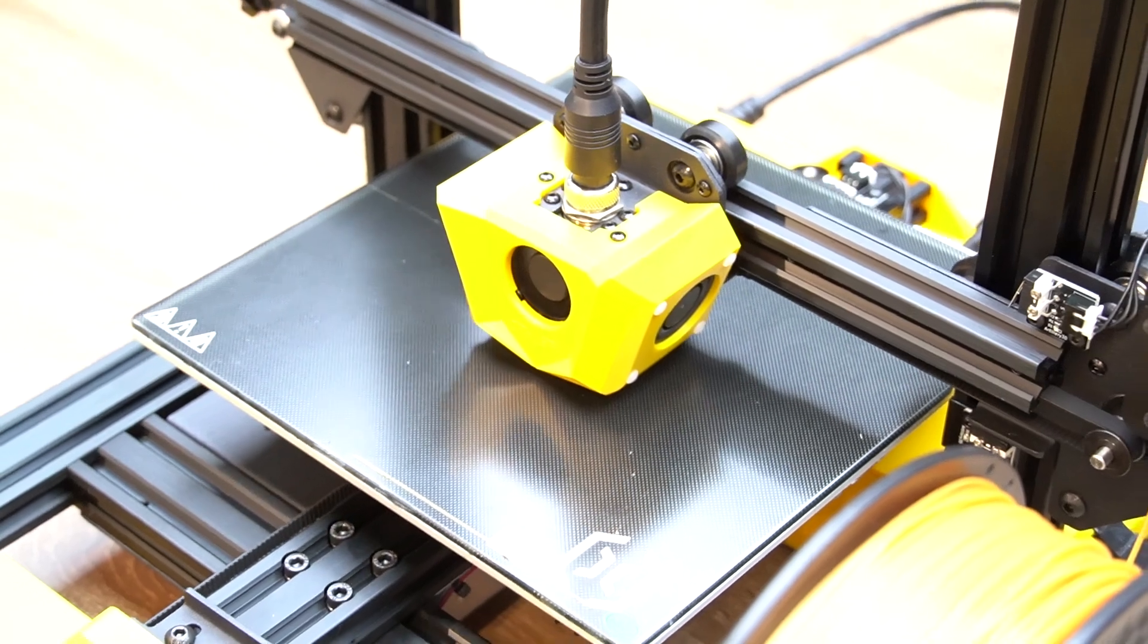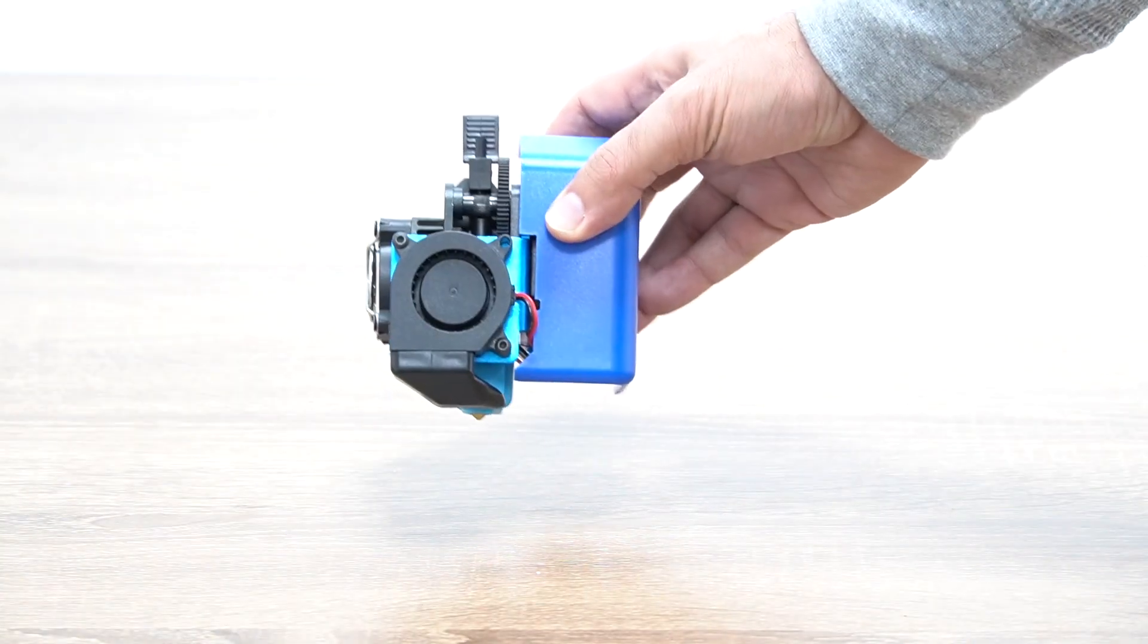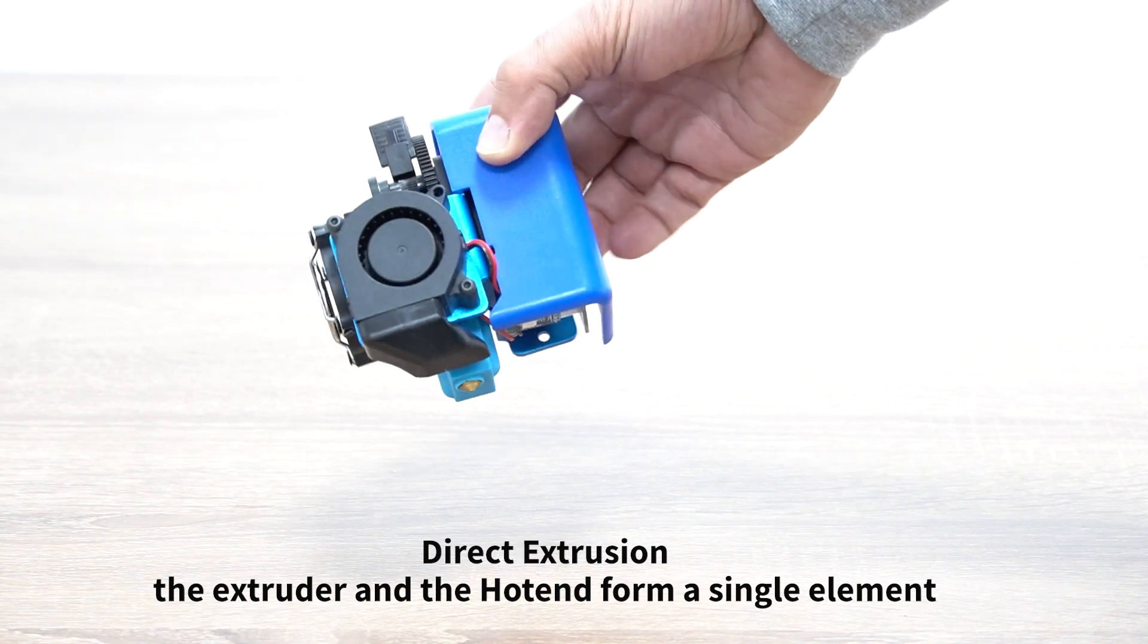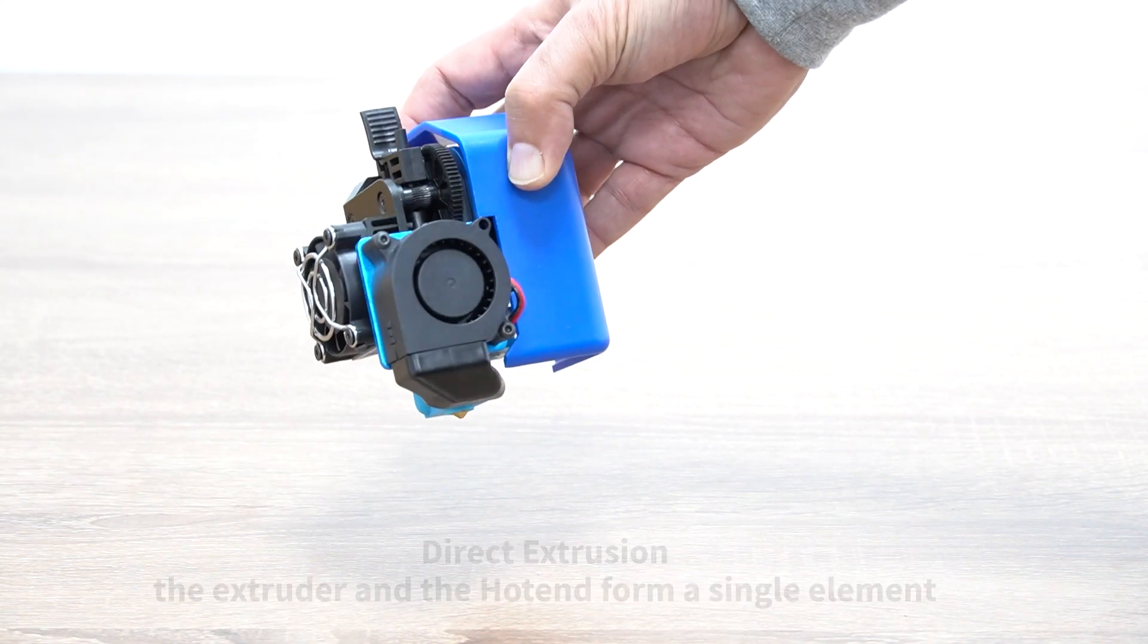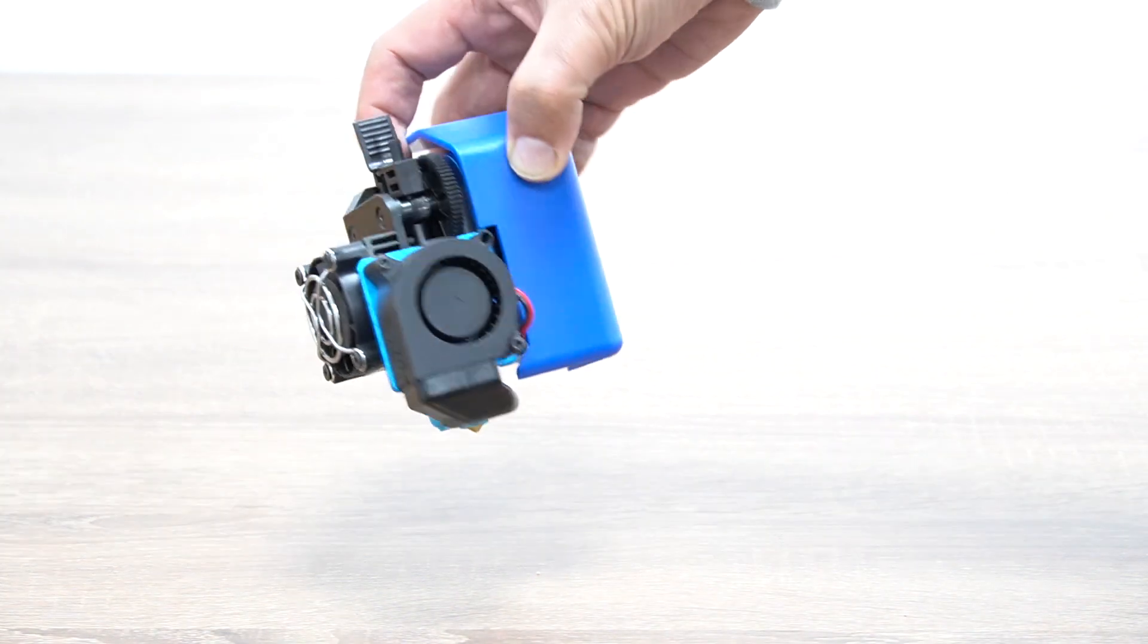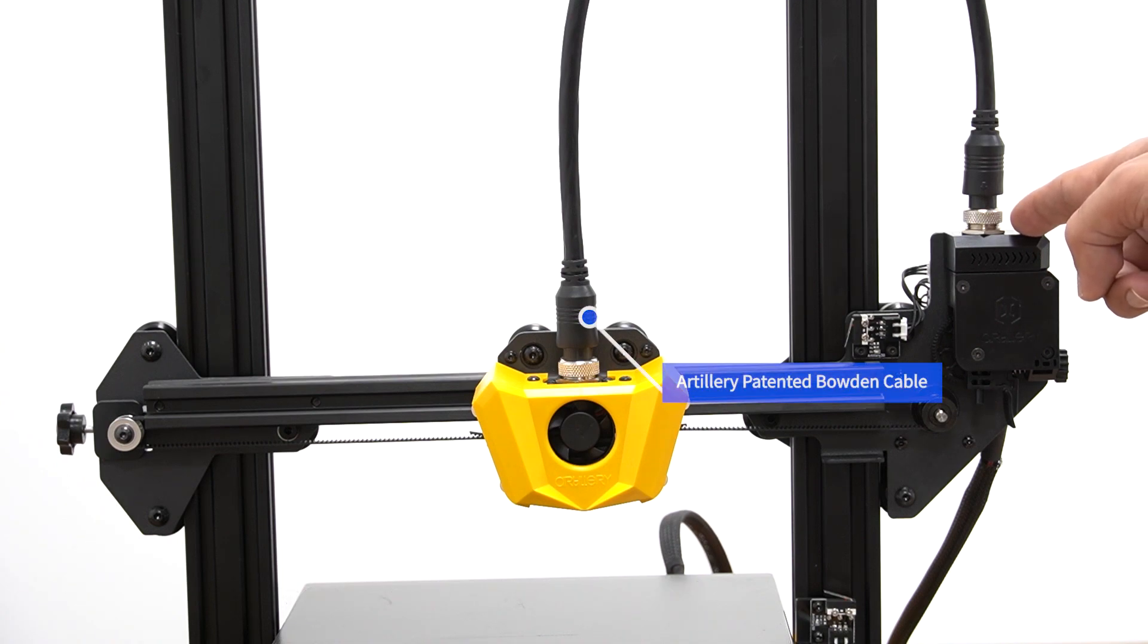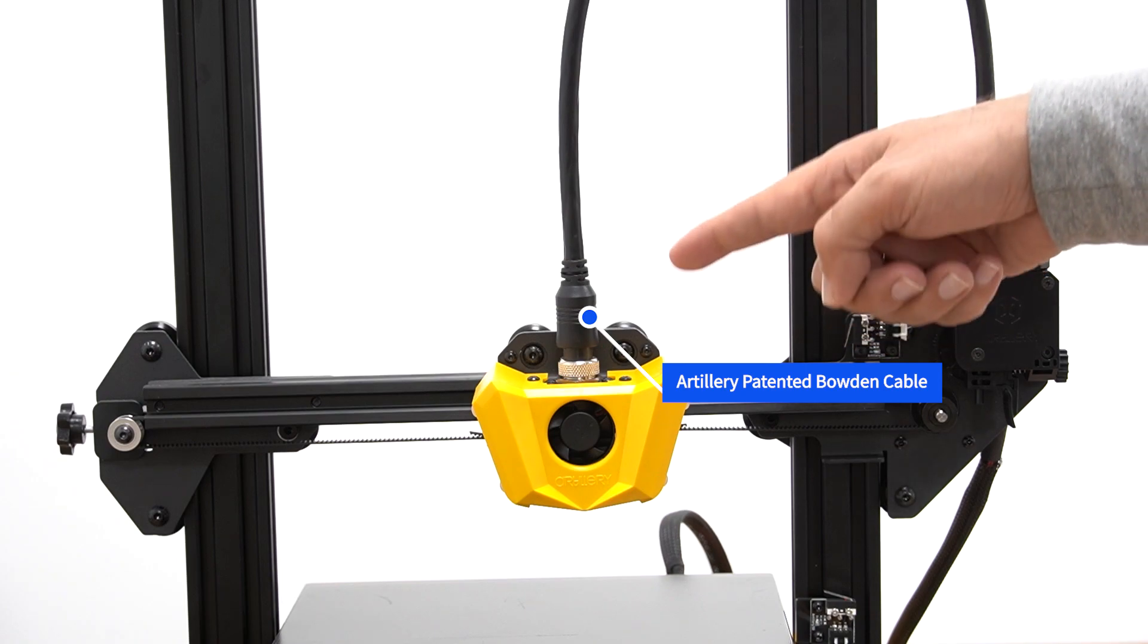But before we jump in, let's see the difference between direct and Bowden extrusion. In direct extrusion system, the extruder and the hot end form a single element, minimizing the distance between the pulling point and the nozzle. In Bowden extrusion system, the extruder is held fixed in the frame of the 3D printer and pushes the filament into the hot end through a tube called a Bowden tube or filament tube.